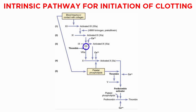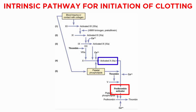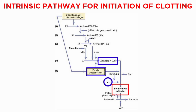Factor 8 is missing in a person who has classic hemophilia, for which reason it is called the anti-hemophilic factor. The final step involves the action of activated factor 10 to form prothrombin activator, which is similar to the final step of the extrinsic pathway. Activated factor 10 combines with factor 5 and platelet or tissue phospholipids to form the complex called prothrombin activator.